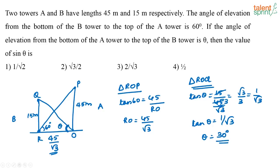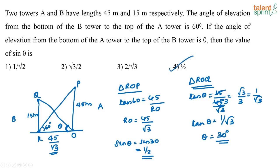Now the question asks for the value of sin theta. Sin theta equals sin 30, which is equal to 1 by 2. So the correct answer is option 4: 1 by 2.